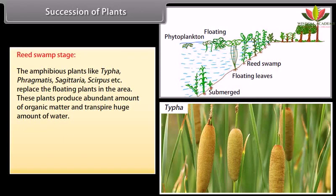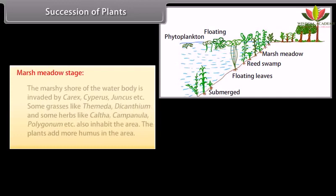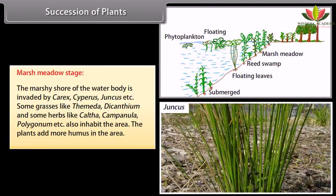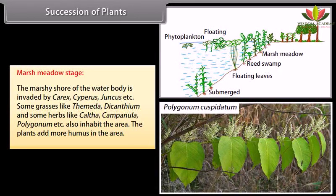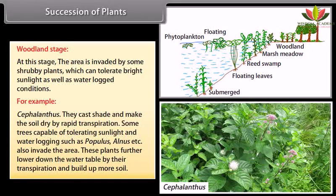Reed swamp plants such as Phragmites, Sagittaria, Scirpus, etc. replace the floating plants. These plants produce abundant organic matter and transpire huge amounts of water, building up the shore by settling sedimentary material and humus. The substratum now changes to a marshy soil. Marsh meadow stage: the marshy shore is invaded by Carex, Cyperus, Juncus, etc., along with grasses like Themeda, Dicanthium, and herbs like Caltha, Campanula, Polygonum, etc. These plants add more humus to the area.